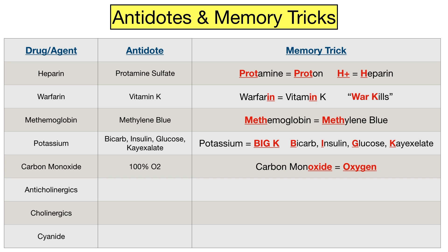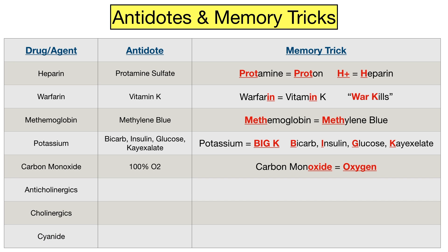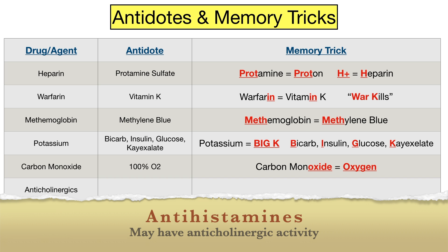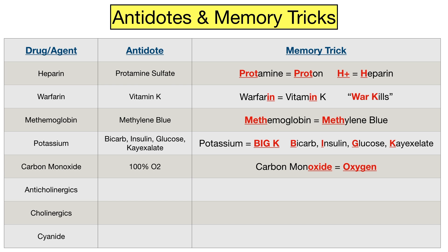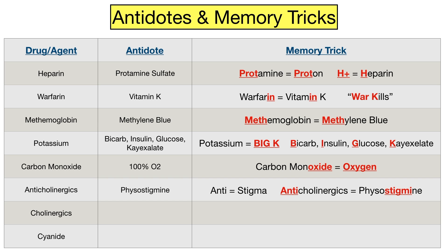The next medication class is anticholinergics, which are drugs that block the effects of acetylcholine. Anticholinergics can be used to treat respiratory disorders such as asthma or COPD, Parkinson's, mydriasis, allergies, and urge incontinence, to name a few. Some over-the-counter medications can have anticholinergic activity — an example is antihistamines such as diphenhydramine. The antidote for anticholinergic toxicity is physostigmine. The way I like to remember this is to think of the prefix 'anti,' which means against, and I associate that with the word stigma to remember physostigmine. Board exams also like to test on jimson weed, which is an anticholinergic agent.